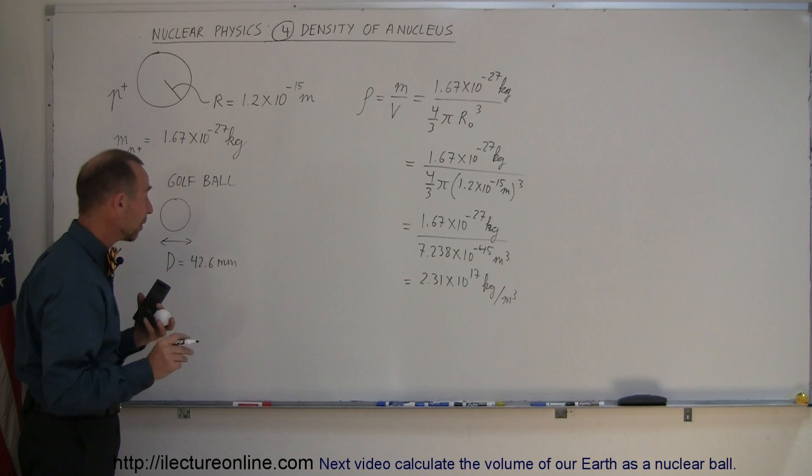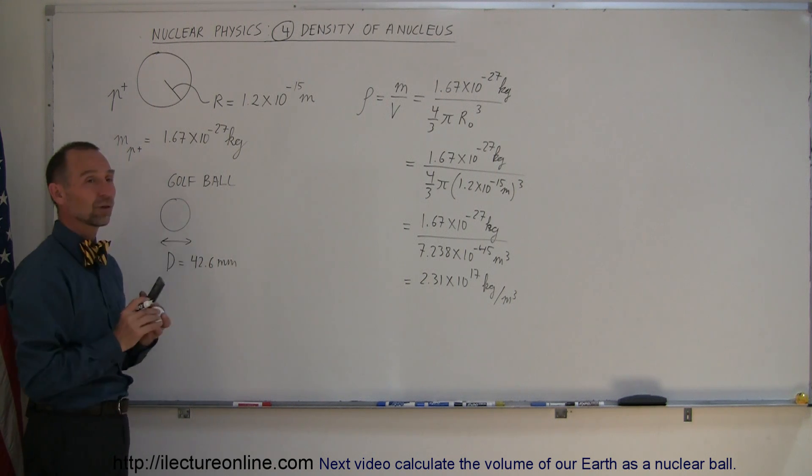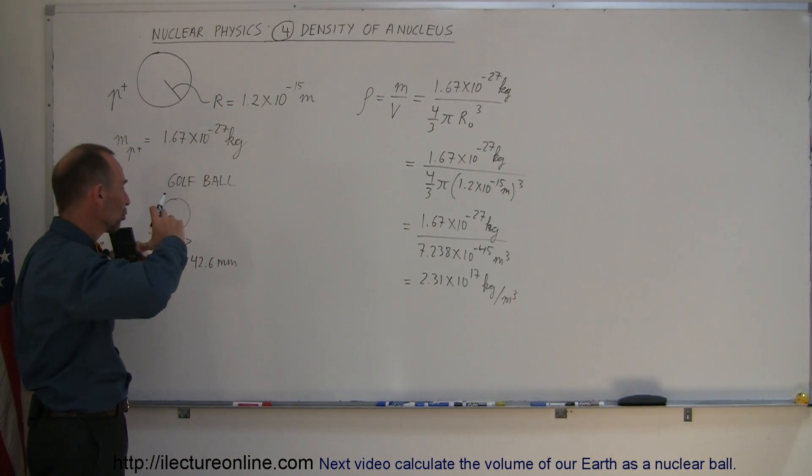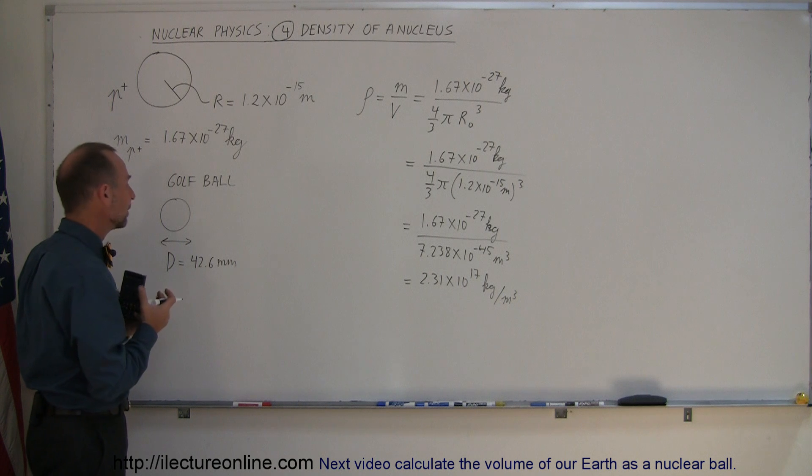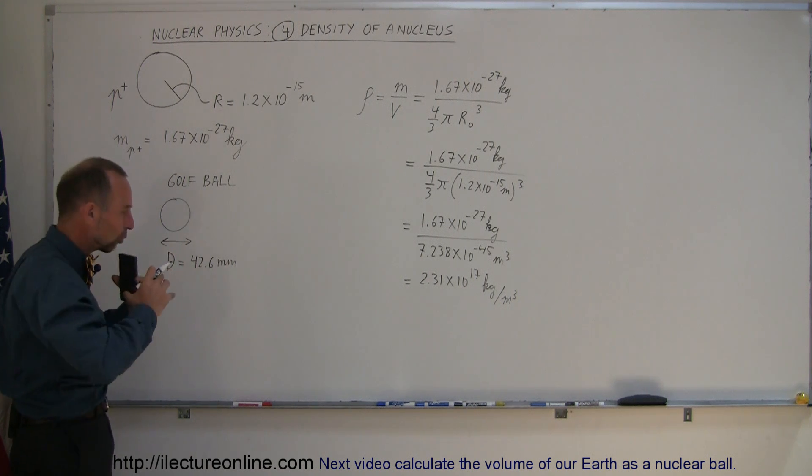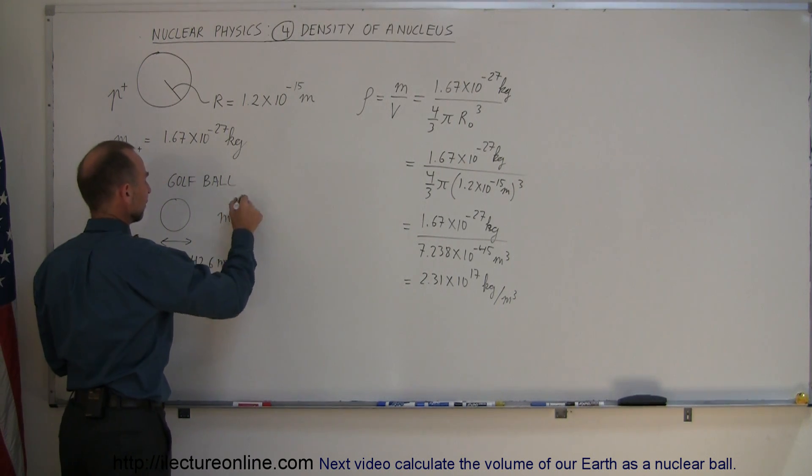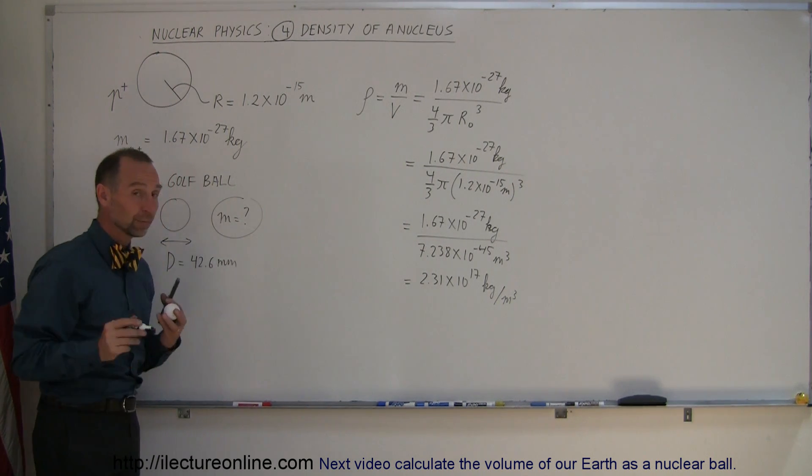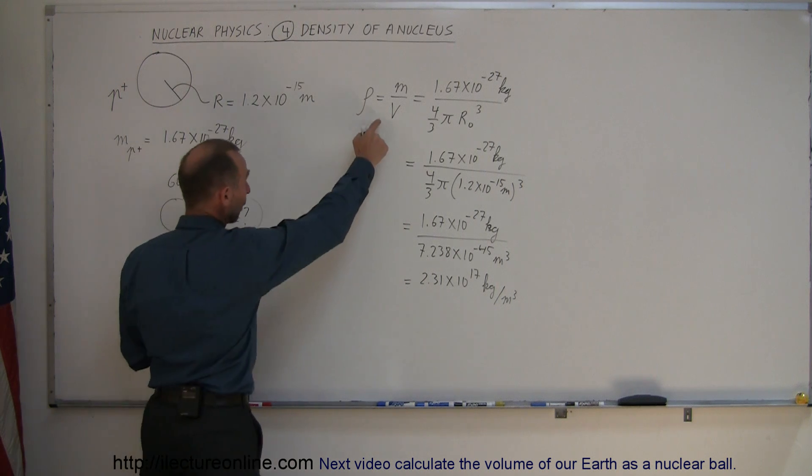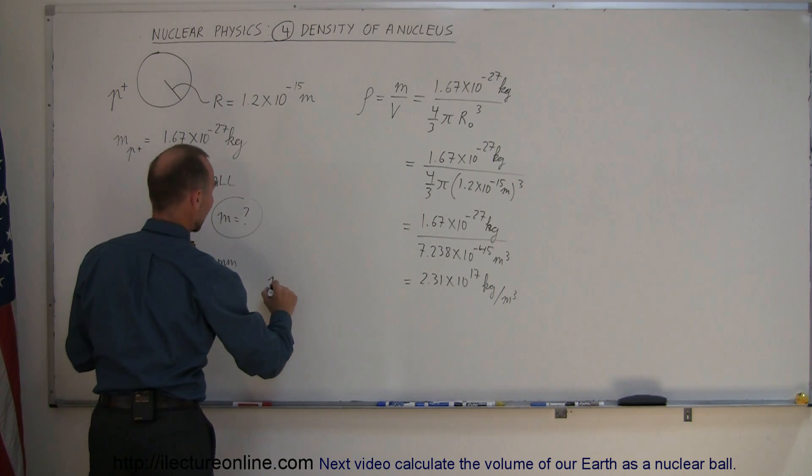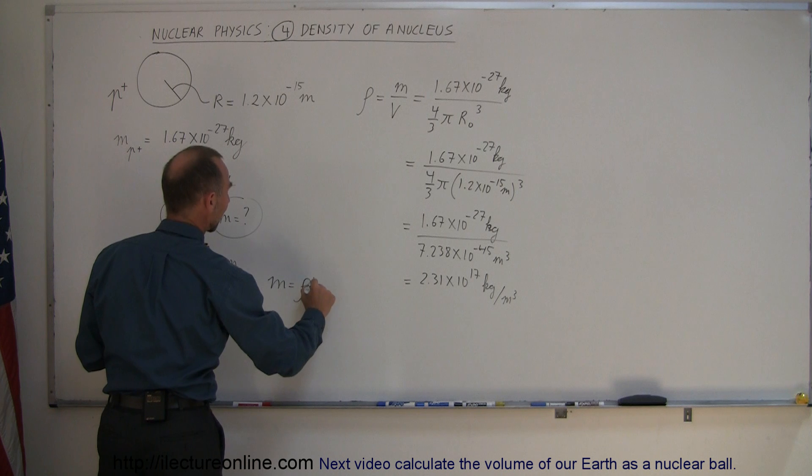Now let's assume that golf ball was completely filled with nuclear material. All the nuclei of atoms squeezed together, no space left between them, no room for electrons, everything squeezed together to a little nuclear ball. What would be the mass of this golf ball? For that, we use this equation where the mass equals the density times the volume.